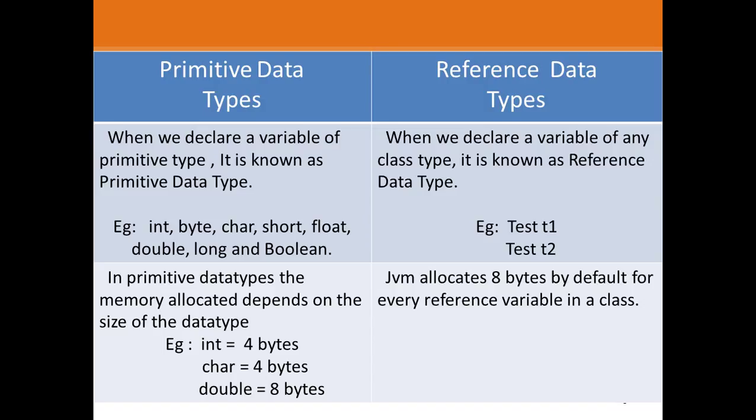When we declare a variable of any class type, it is known as a reference data type. Example: Test t1, Test t2.